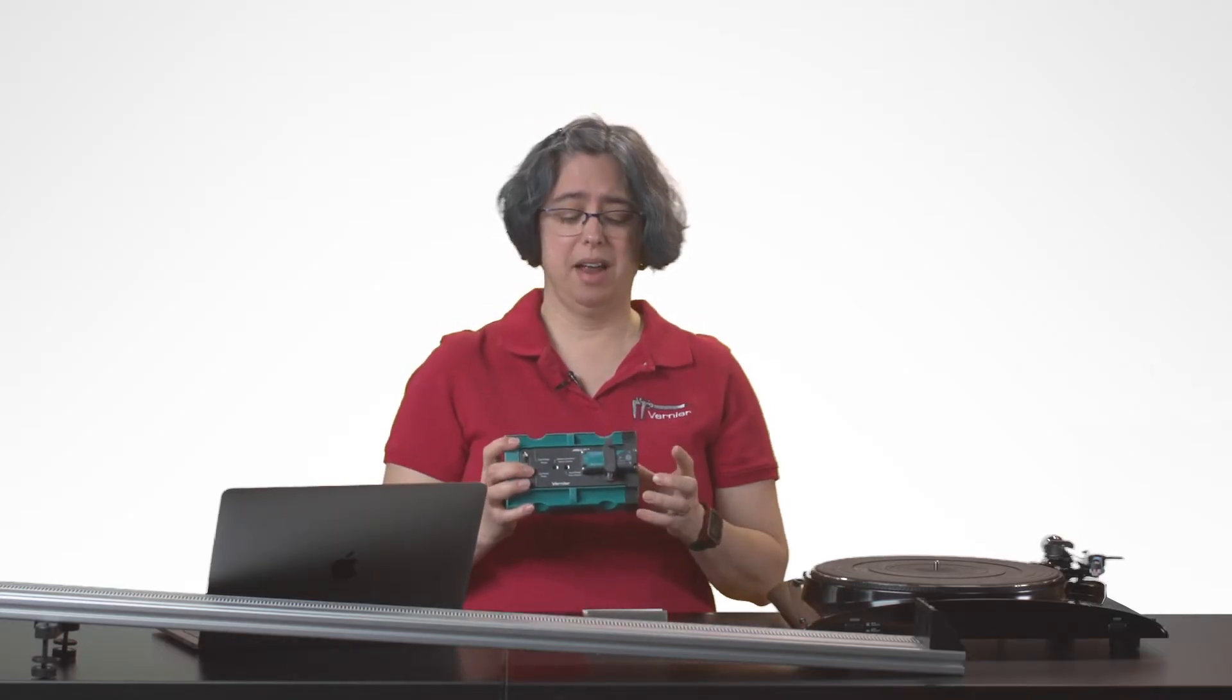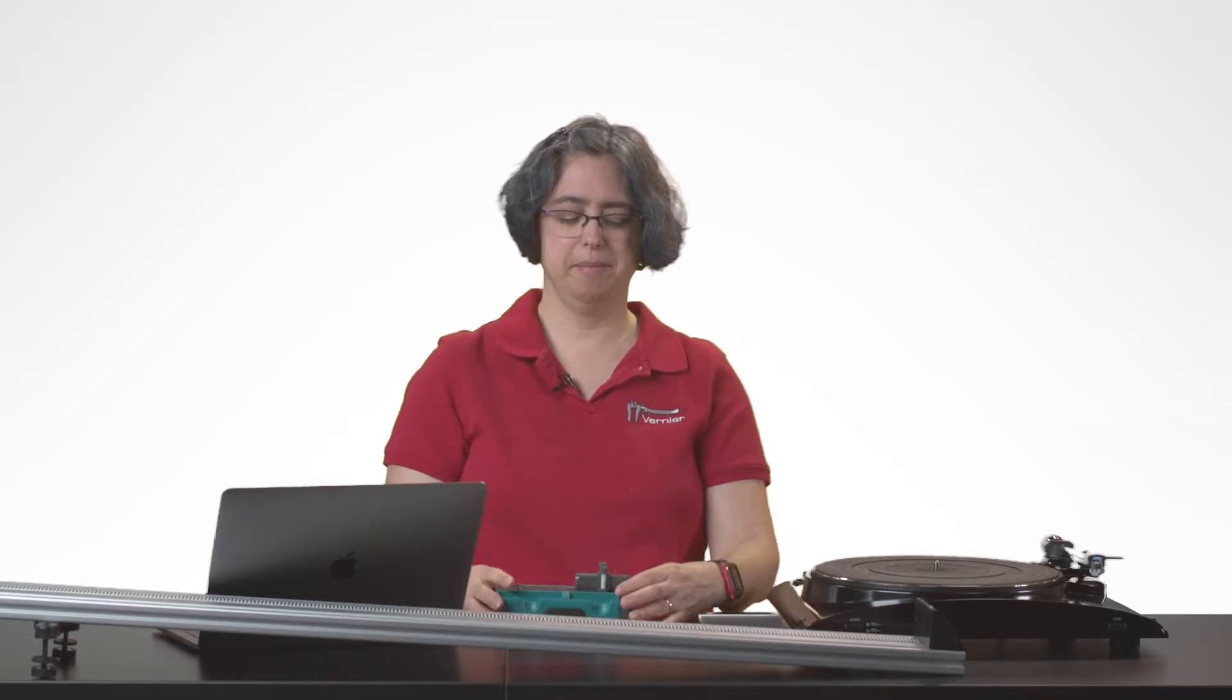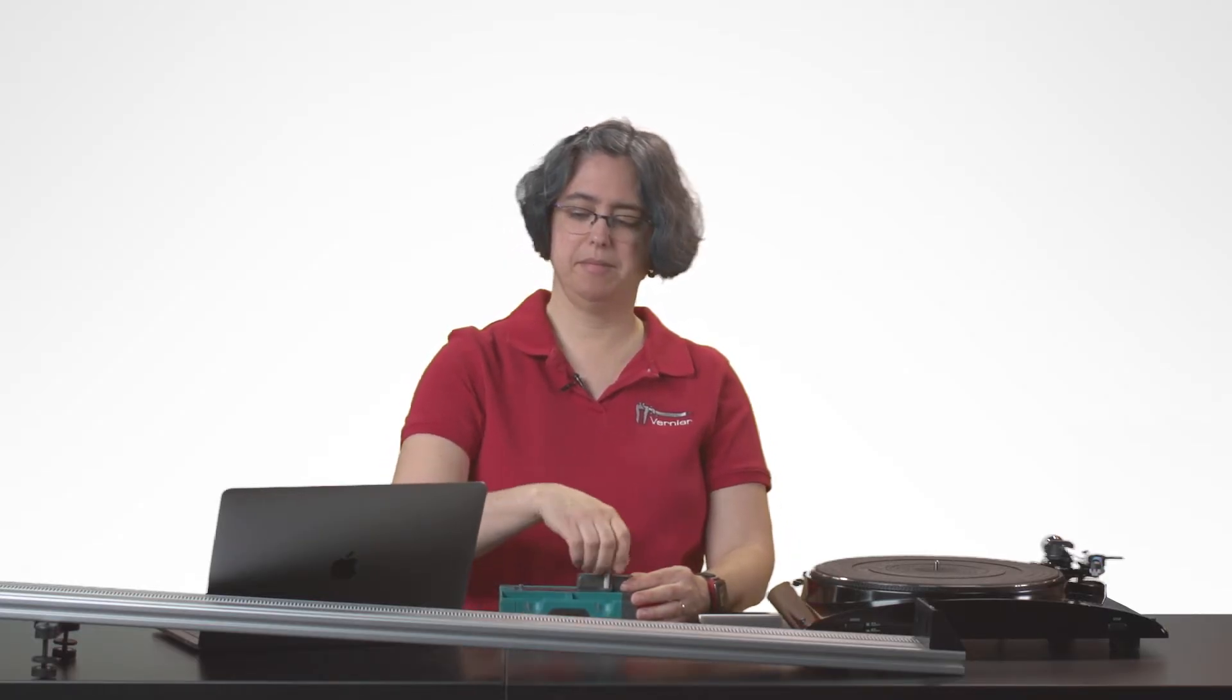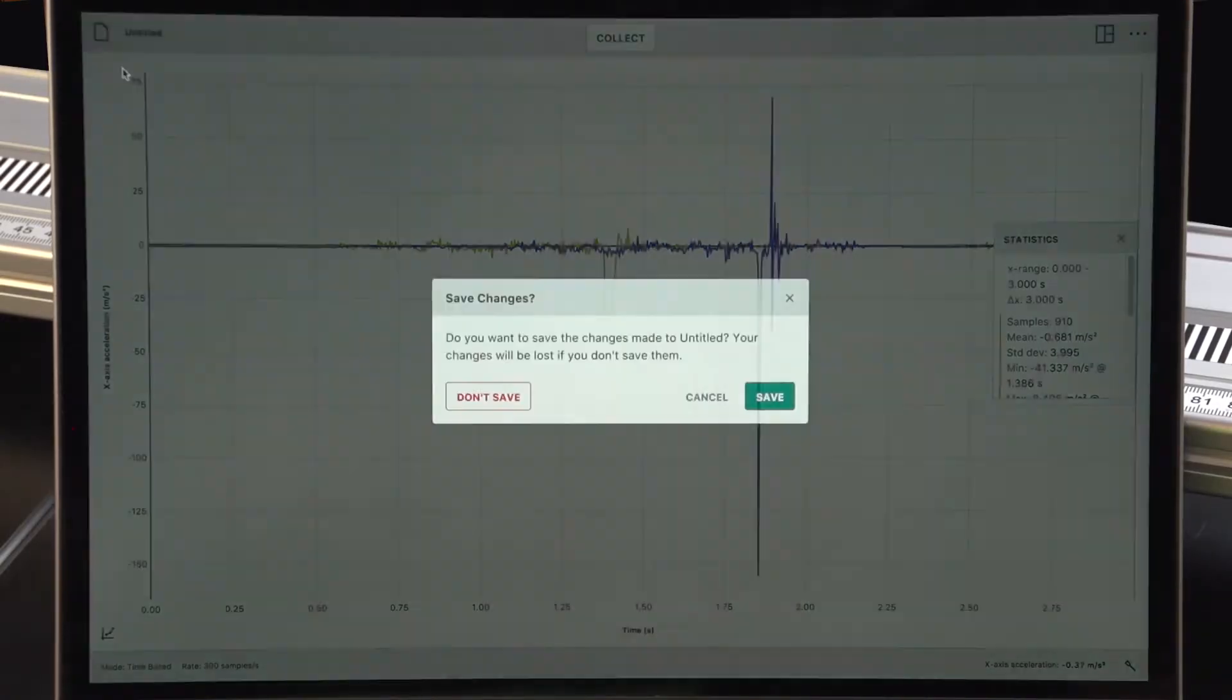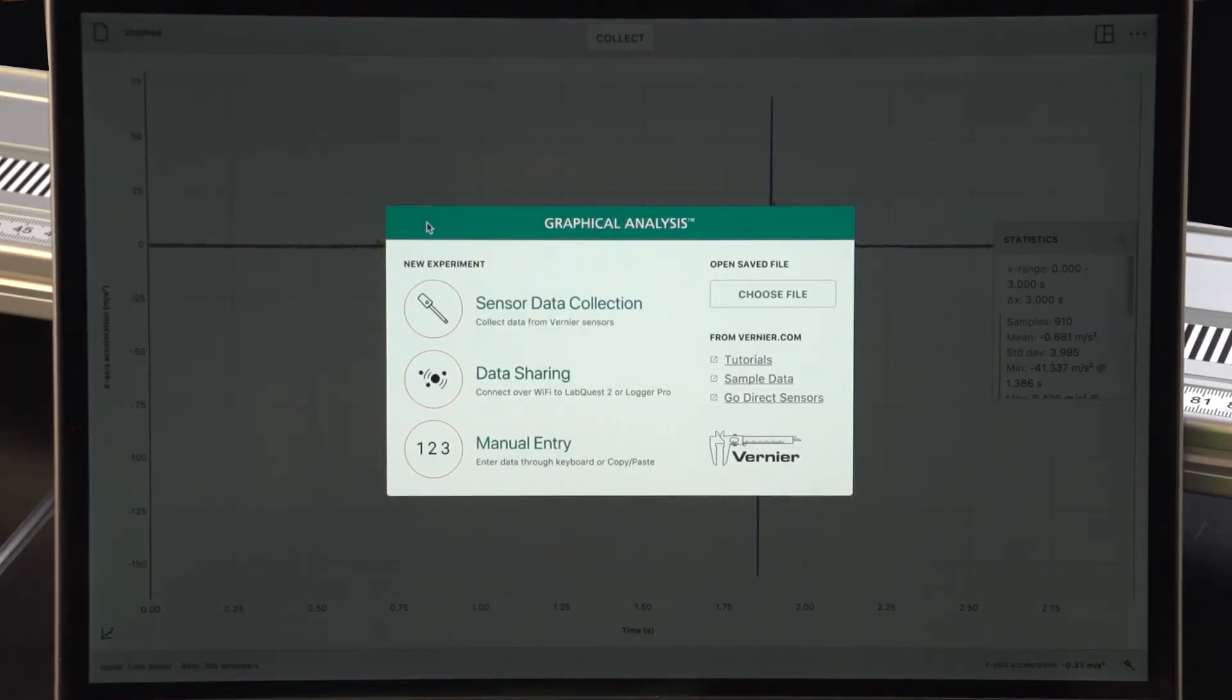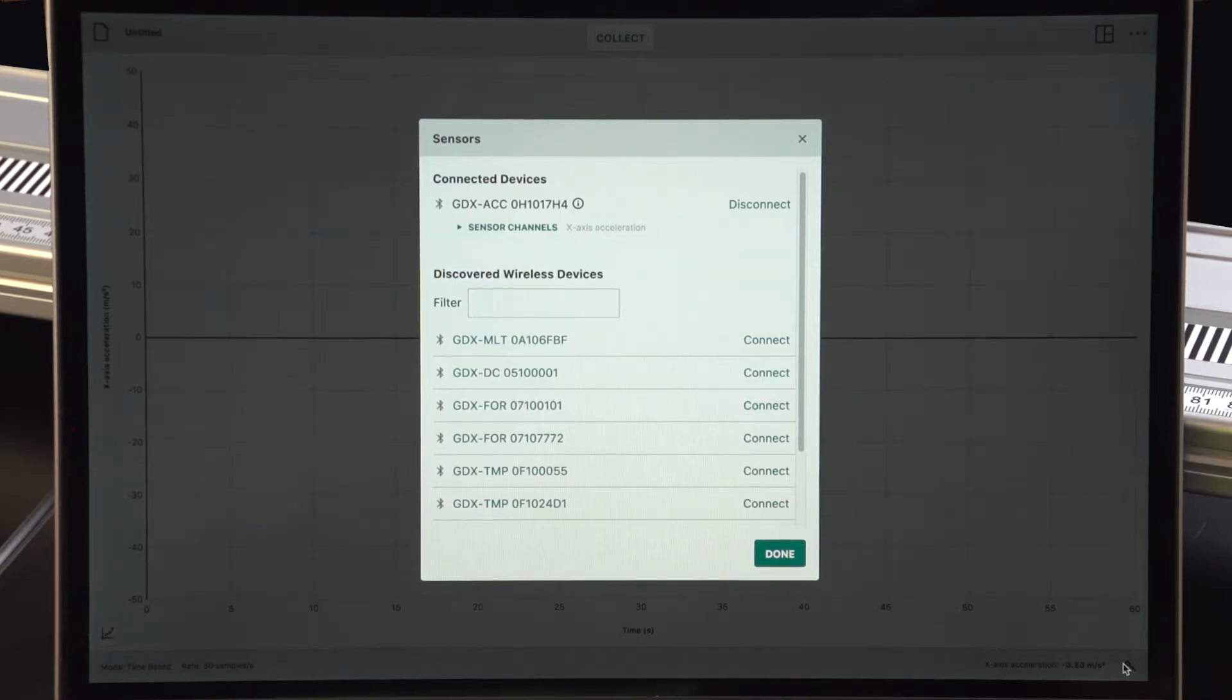Since the sensor has so many channels, you don't want to use it just for acceleration, I'm going to do a different experiment. When I select new experiment in the software, it's going to select the same device that I was already using, so I don't have to find the name in the sensor list again. However, I do need to adjust the channel.